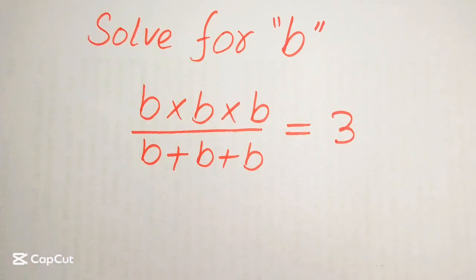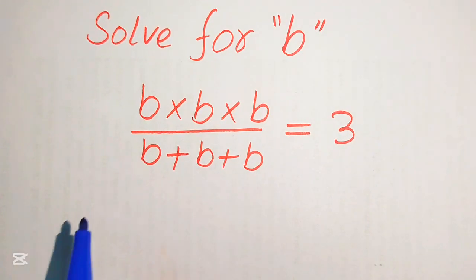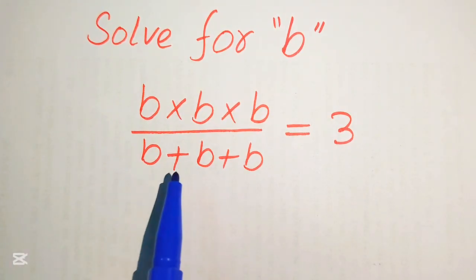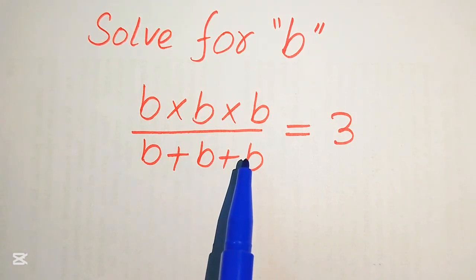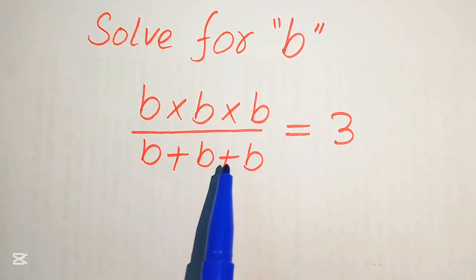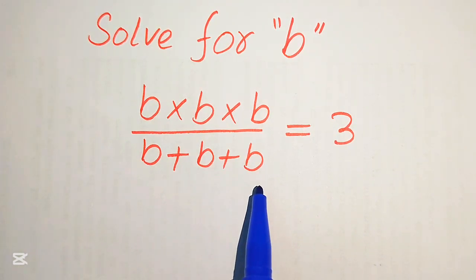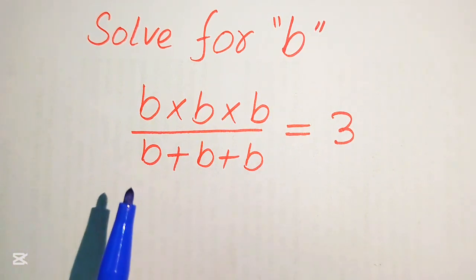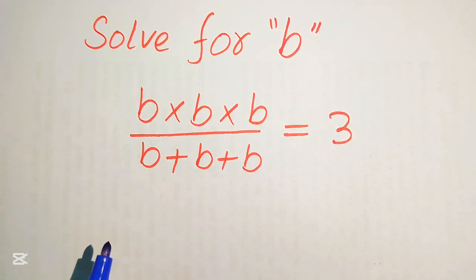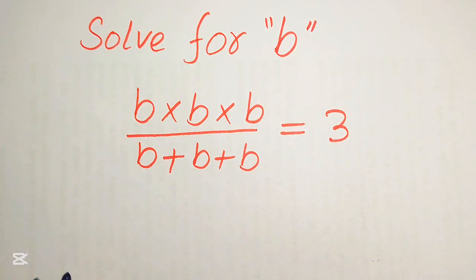Hello everyone, welcome. We have the problem: b multiplied by b multiplied by b, divided by b plus b plus b, equals 3. We will solve this problem for the values of b.